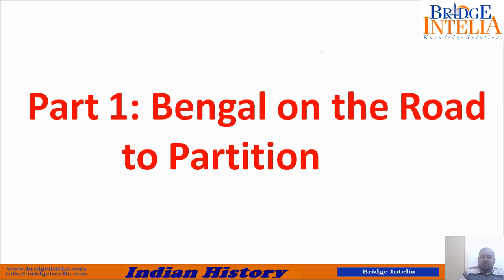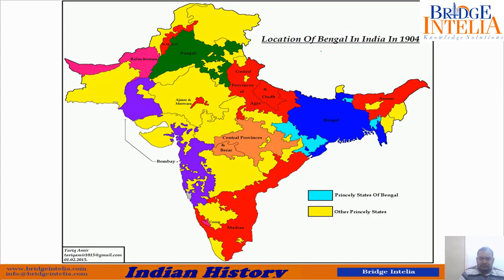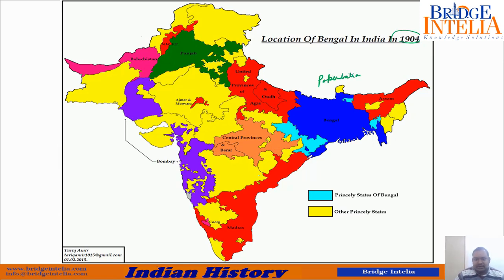Bengal on the road to partition. If you look at this map of India in 1904, Bengal was the largest province in terms of population — not in terms of area. The largest province in terms of area was Madras. You can see Ajmer, Madhwara — there was nothing called Rajasthan, nothing called Uttar Pradesh. You can see United Province, Awadh, Agra — this is what modern day Uttar Pradesh is.